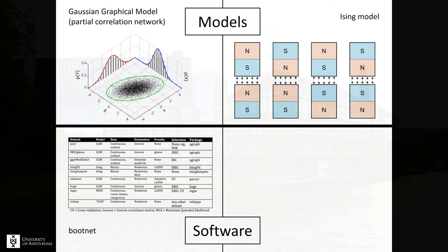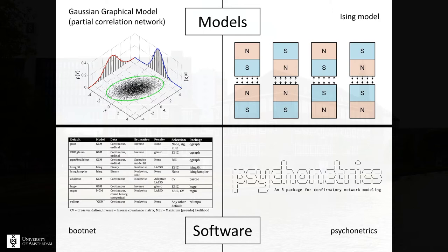I'll also mainly talk about two software packages. I'll talk about the bootnet package, which is a big wrapper package that has default sets for all kinds of other packages that you can use to make the code more easy. And I'll talk about the second package, which is a relatively new package that I made, that you can use for maximum likelihood estimation of networks. I'll also talk a bit about something that's very new, which is called BGGM, or Bayesian Gaussian graphical models, for Bayesian estimation.